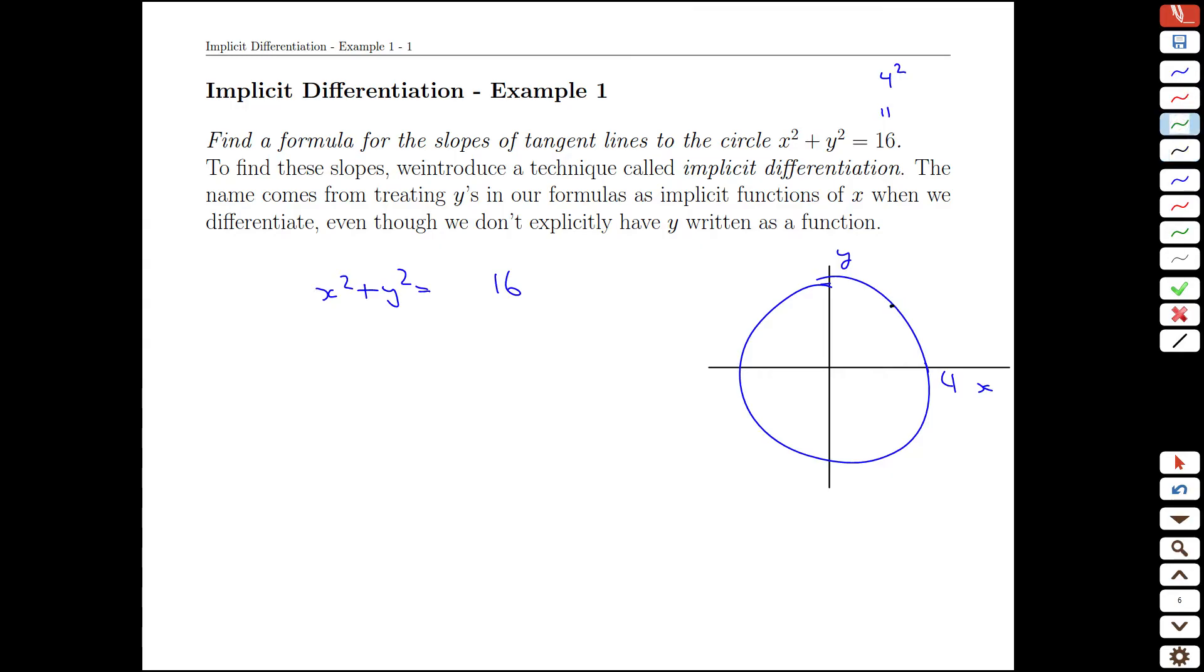What we're then going to do is use the Leibniz notation here and we're going to transform both sides of our equation. If these things are always equal, even though x and y are changing, they always add up to 16 which is a constant, then that means that the rate of change should be equal as well.